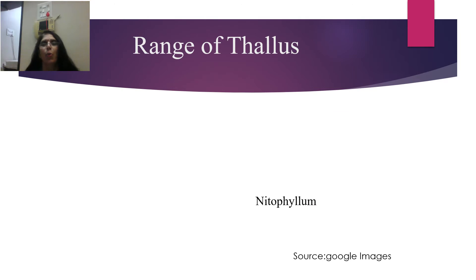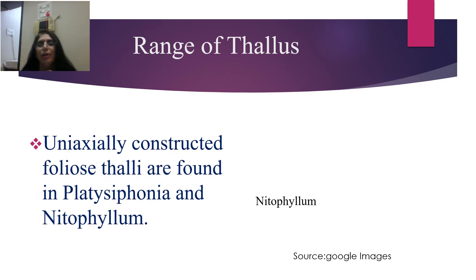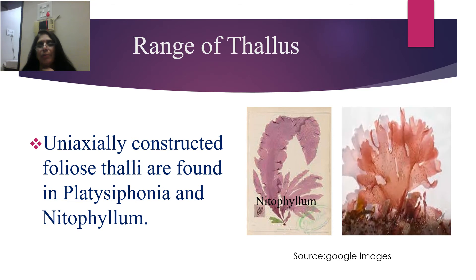Children, I think you can now visualize that just from simple coccoid forms, the thallus got slightly changed to filamentous and then to branched filaments, and now to uniaxially constructed thallus as in Batrachospermum. Next will be uniaxially constructed foliose thalli, which are found in Platysiphonia and Nitophyllum. I could not get the picture of Platysiphonia, so I will show only Nitophyllum. You can see Nitophyllum here — it is foliaceous in nature, just like leaf-like structures. They are not leaves; they are leaf-like structures.